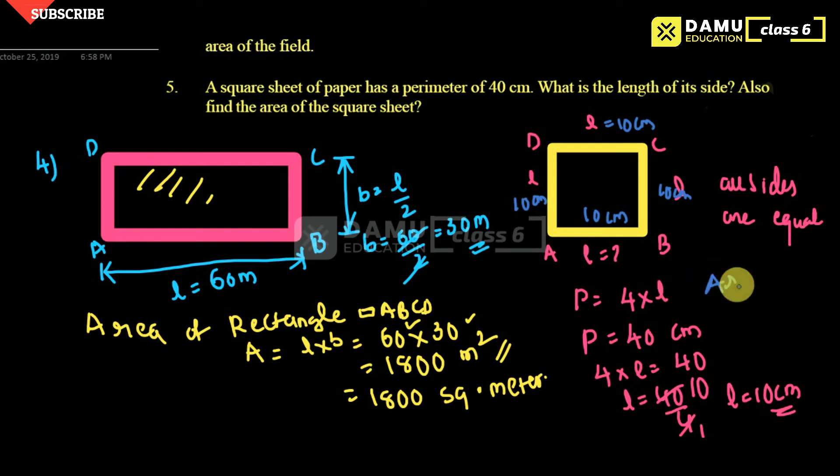And what is the area? You can calculate. Area will be side into side, that is length into length. Length is 10, again 10. That will be 10 times 10 equals 100 centimeter square or 100 square centimeter.